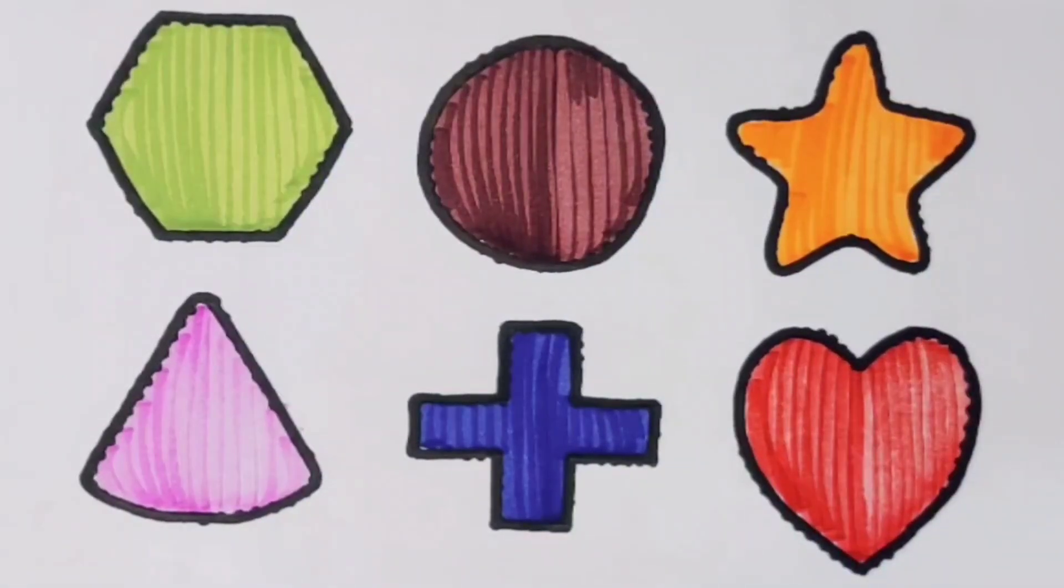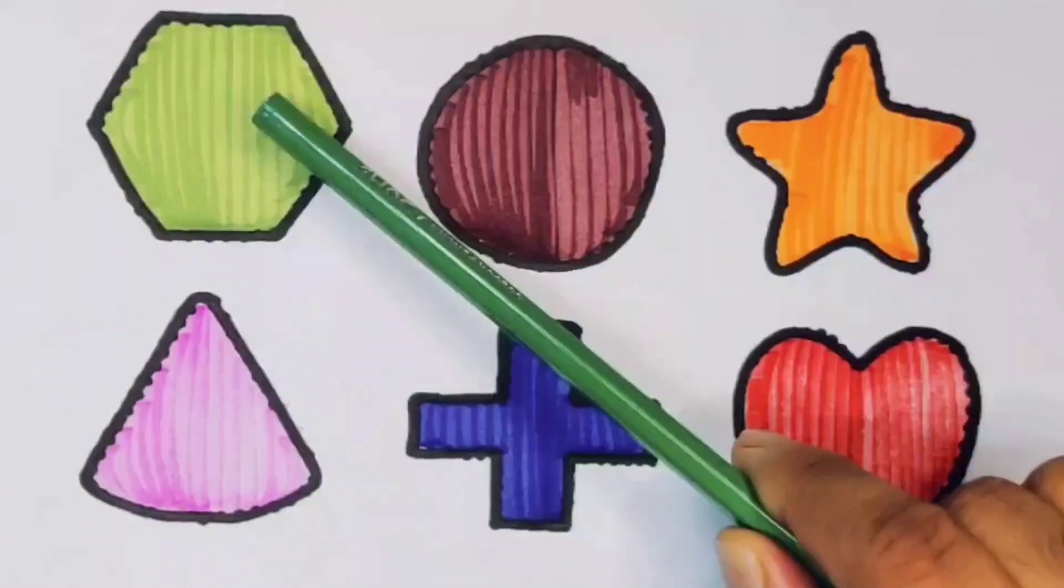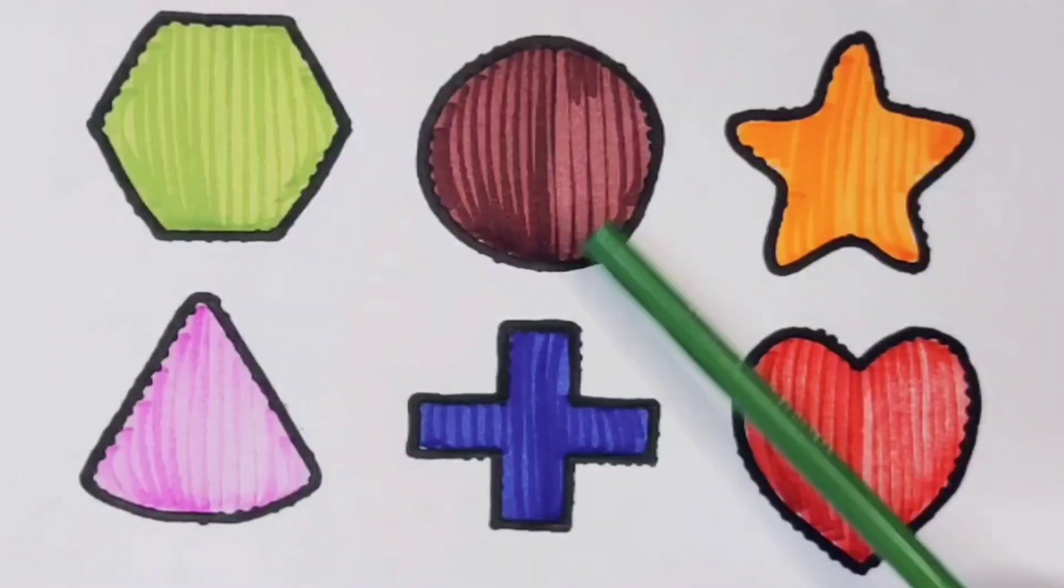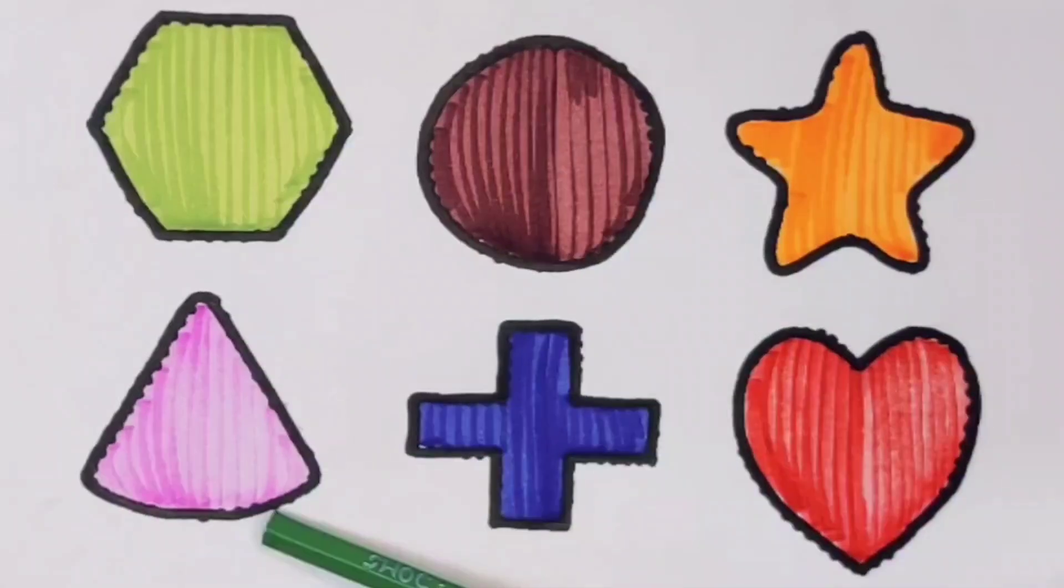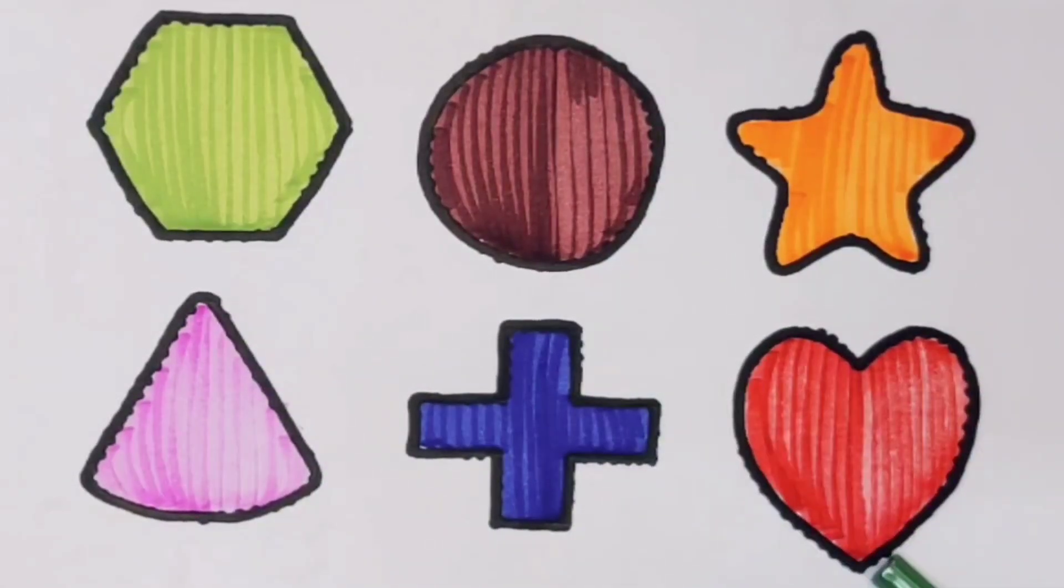What we learned: we learned green color hexagon, chocolate color circle, orange color star, pink color triangle, blue color cross, and red color heart.